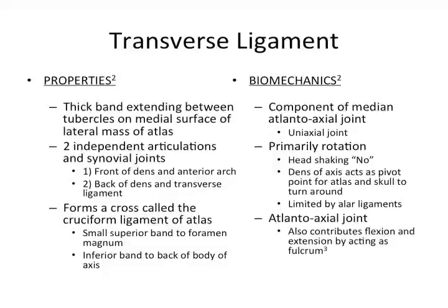Biomechanics of the transverse ligament include its role as a component of the median atlantoaxial joint. It makes a uniaxial joint and contributes primarily rotation, such as when the head shakes no. The dens of the axis acts as a pivot point for the atlas and skull to turn around, and the amount of rotation is limited by the alar ligaments.